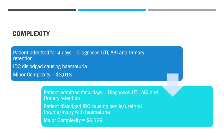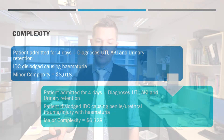A patient admitted for four days with a UTI, AKI, and urinary retention. They dislodge the IDC — it's not said why — and it causes hematuria: $3,000, minor complexity. But if the patient dislodges the IDC and it causes penile or urethral trauma or injury with hematuria, because we've added that detail, we increase to major complexity and double the income.